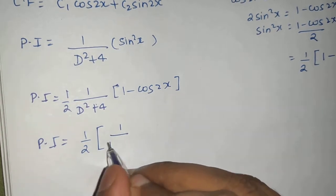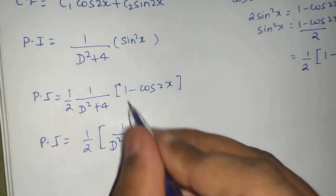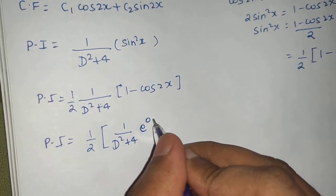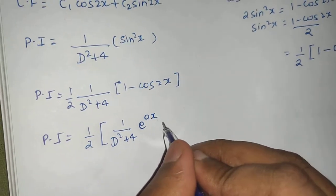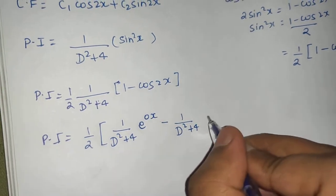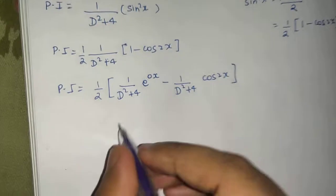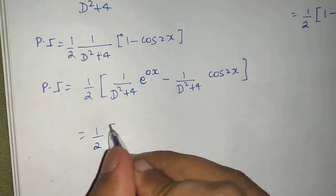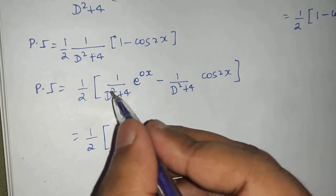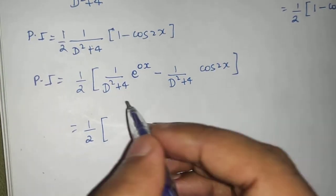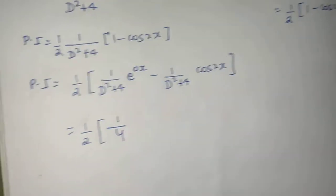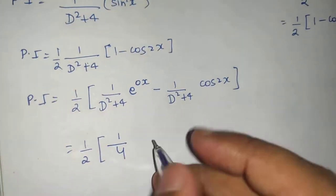1 upon d square plus 4 operating on 1 - 1 can also be written as e power 0x - minus 1 upon d square plus 4 operating on cos 2x. So this is 1 by 2. What is the rule for e power ax? Just replace this d by a, which is here 0. So if you do so, you will get 1 by 4, because 0 square is 0 only, and e power 0x.